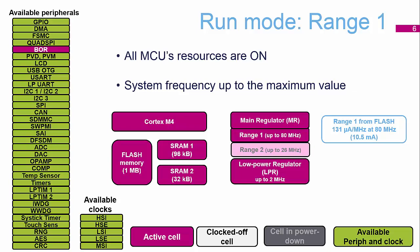In run mode range one, every single resource of the MCU is available to you. Everything shown in dark pink on the diagram is available and active — the flash, RAM, core, and the regulator configured as range one. The low power regulator is also available, and the brownout reset is in use. All other peripherals and clocks are available depending on what you need for your application.